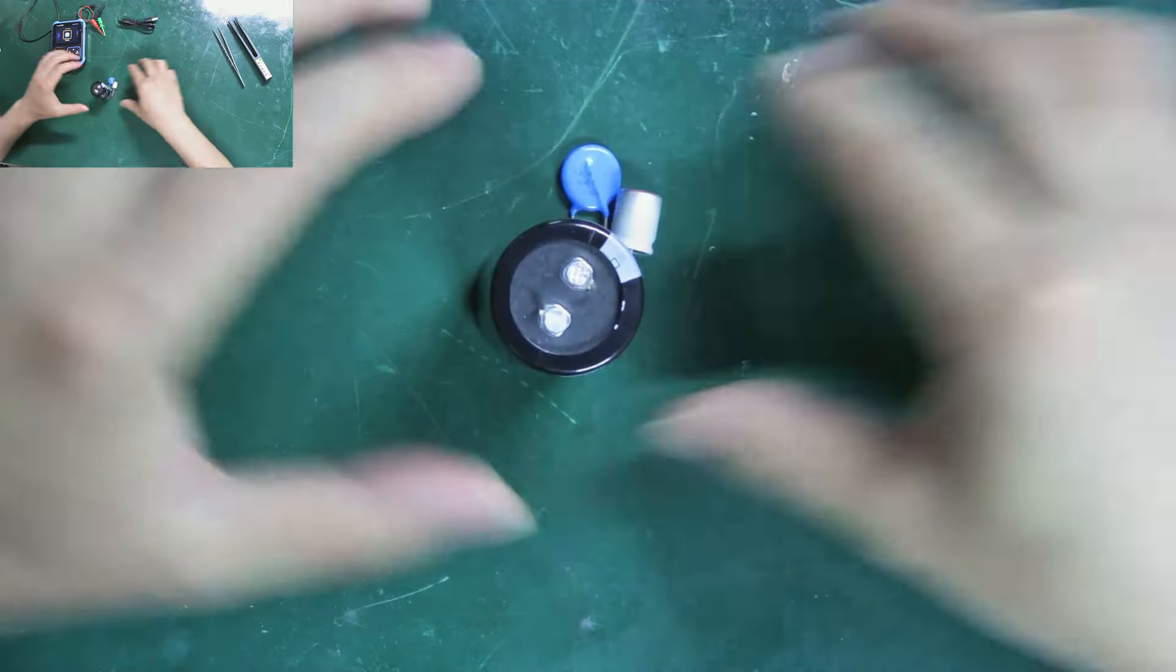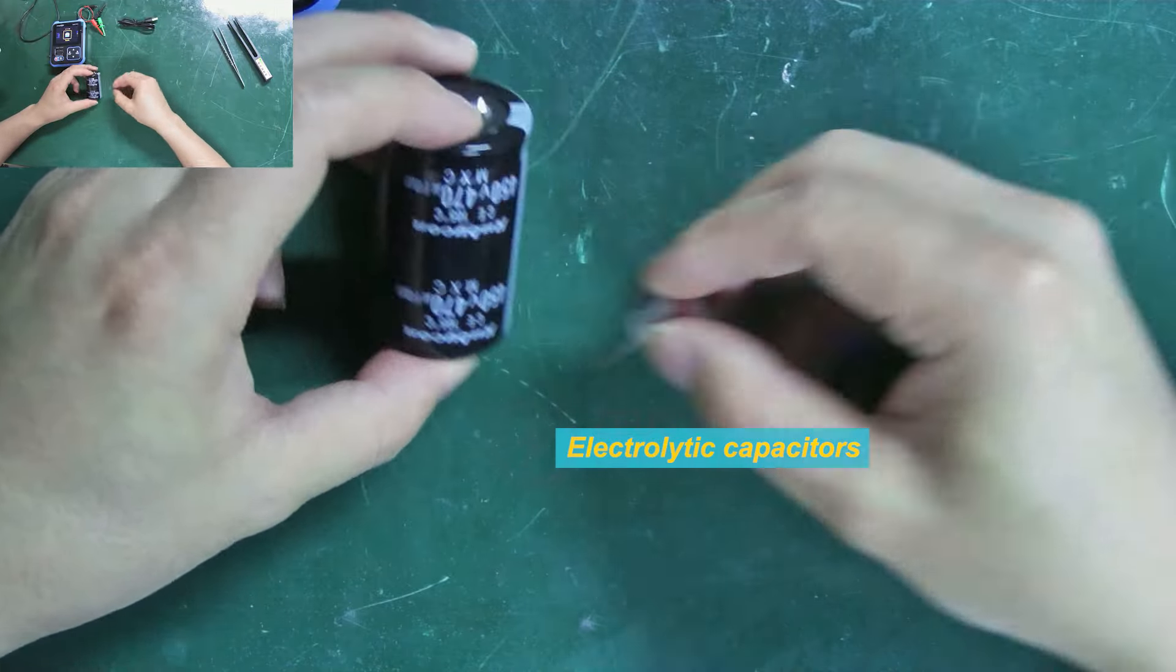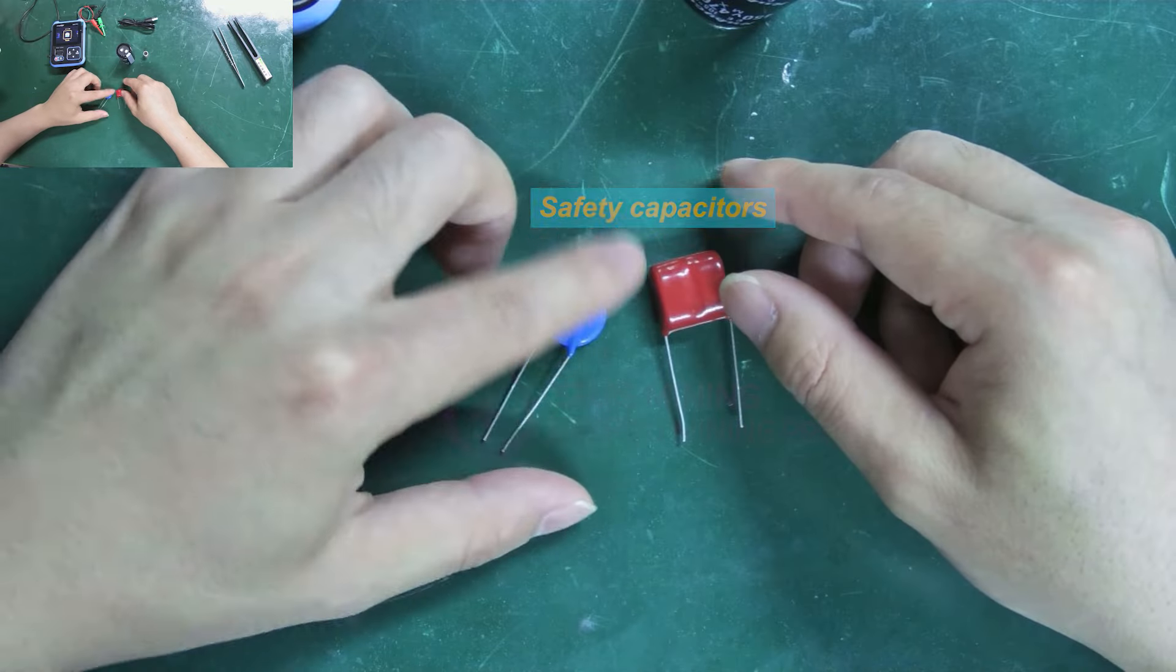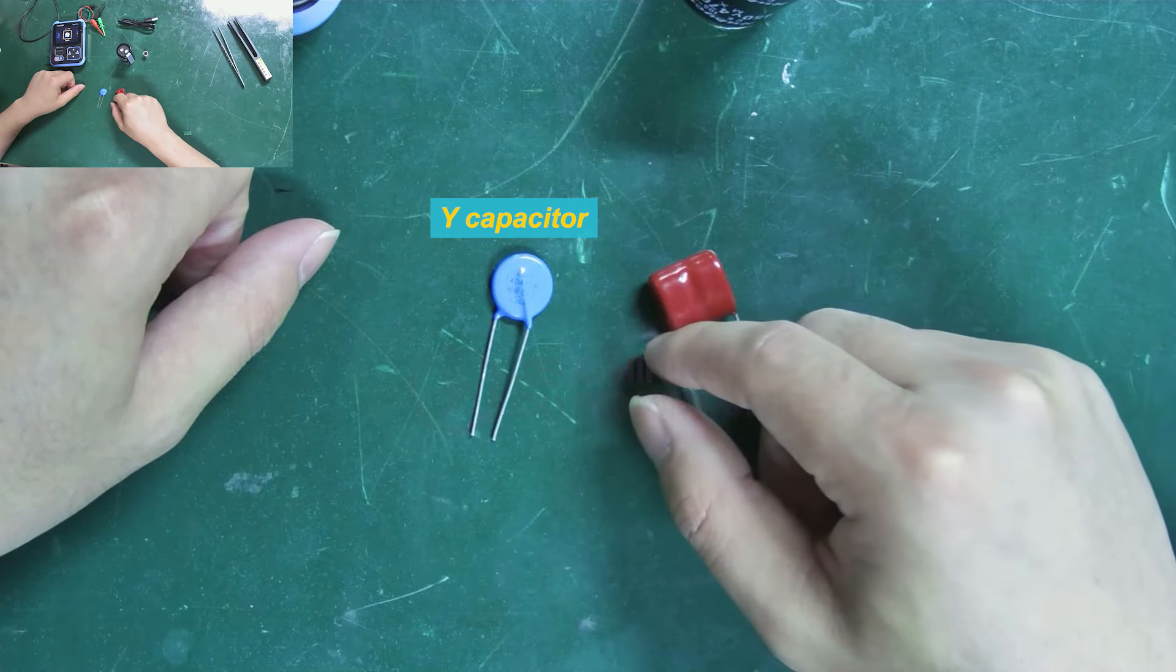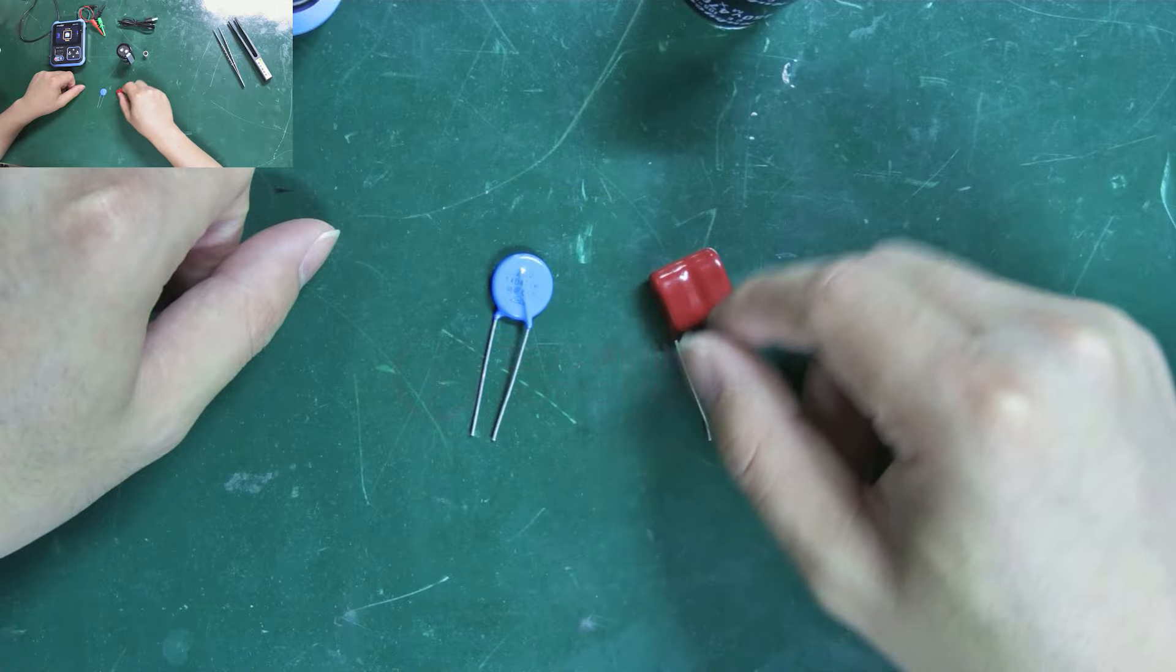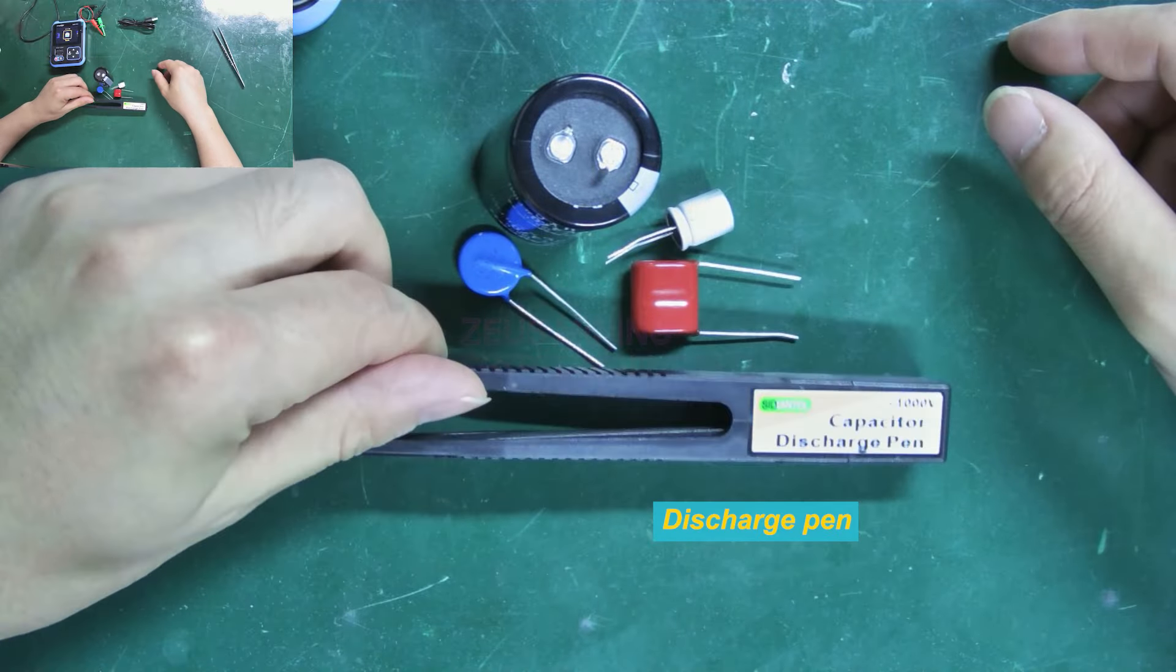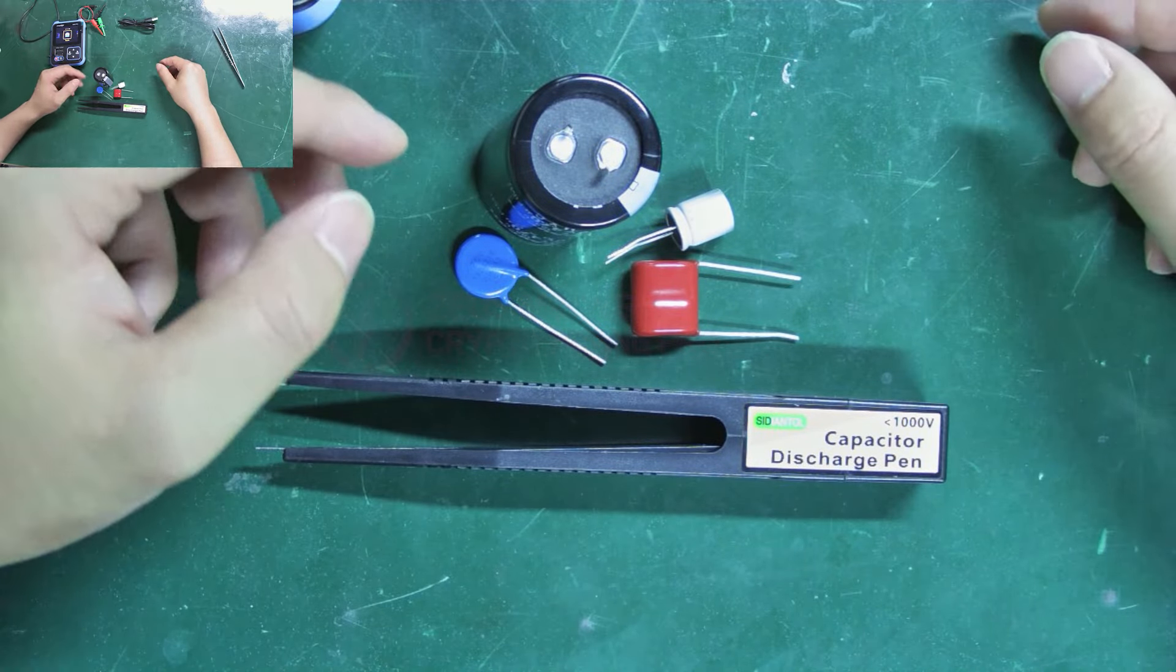Next I will demonstrate how to measure components. These two are electrolytic capacitors. These are two safety capacitors - the blue one is a Y capacitor and the red one is an X capacitor. When measuring, we need to use a discharge pen to discharge the capacitors. Since we are using brand new components today, we can test them directly.